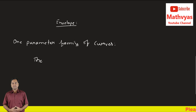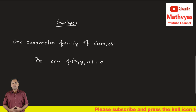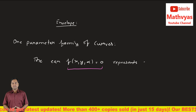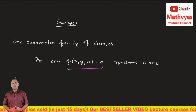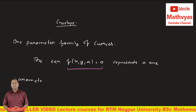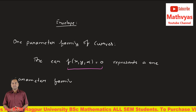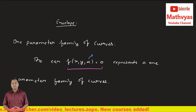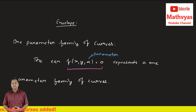If I write an equation of the type f(x, y, α) = 0, this equation represents a one-parameter family of curves. Here, the term α is a parameter, and x and y are the independent variables.